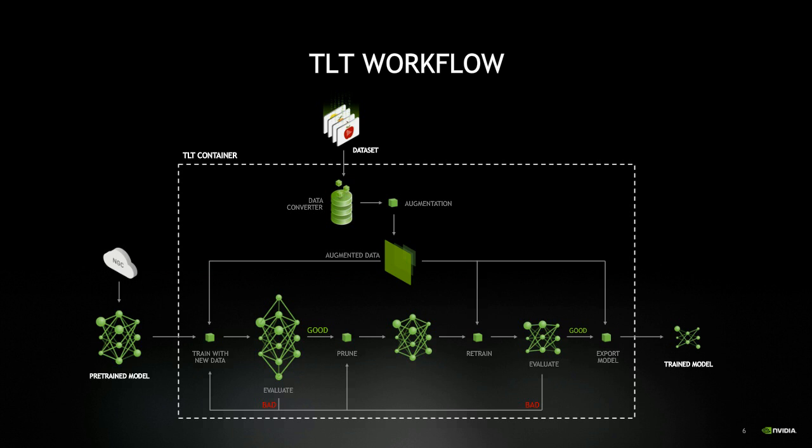Here's the workflow for training with TLT and a pre-trained model. TLT consists of just five commands: data augment, train, prune, evaluate, and export. The workflow assumes you have your own dataset. You start by pulling the container and pre-trained model from NGC, then augment your dataset. Augmentation enhances your dataset to significantly improve accuracy, especially with small datasets. Supported spatial augmentations include image rotation, zoom in, zoom out, and image shift. Color augmentations include color shift, hue rotation, saturation, and contrast adjustment.